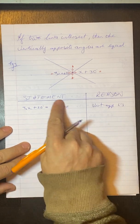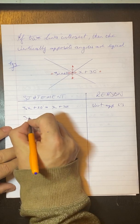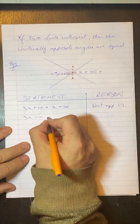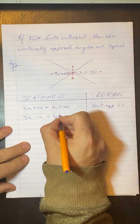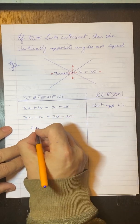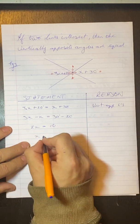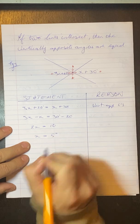This is just like a normal equation, x is on the one side, numbers on the other. So we get here 3x minus x is equal to 30 minus 20. So that will give us 2x is equal to 10. Divide both sides by 2, and we get x is equal to 5 degrees.